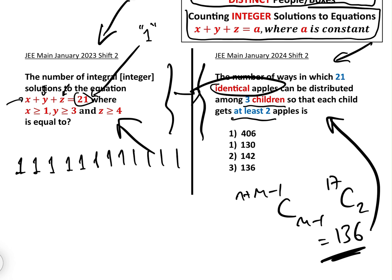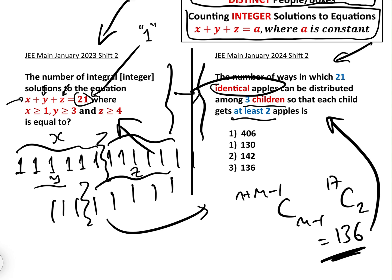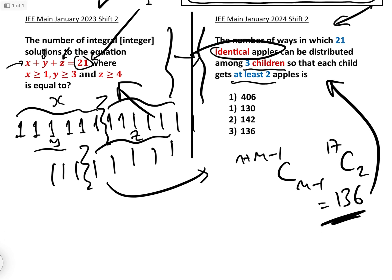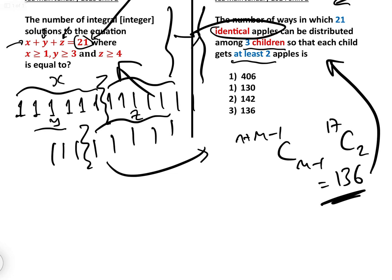So we got 21 number ones: 1, 2, 3, 4, 5, 6, 7, 8, 9, 10, 11, 12, 13, 14, 15, 16, 17, 18, 19, 20, 21. We've got 21 of those identical ones and we've got to split them using our bars. There's bar number one and here's bar number two. That is how many x is, that is how many y is, and that is how many z is. It's exactly the same method—basically identical objects into distinct bins.